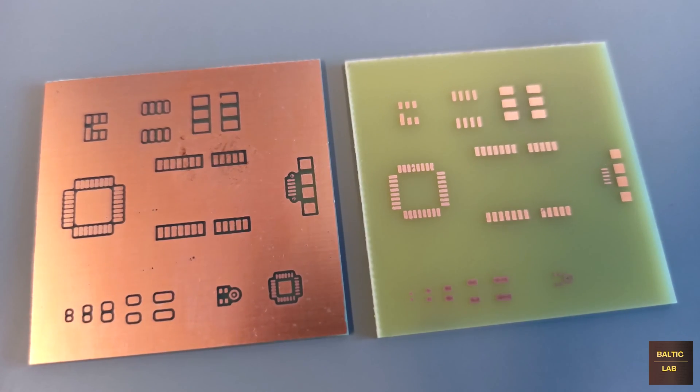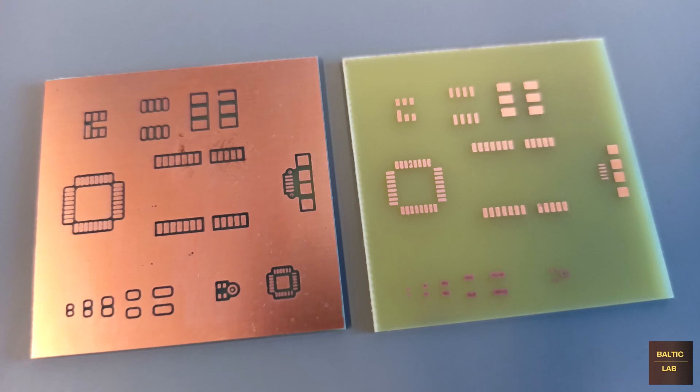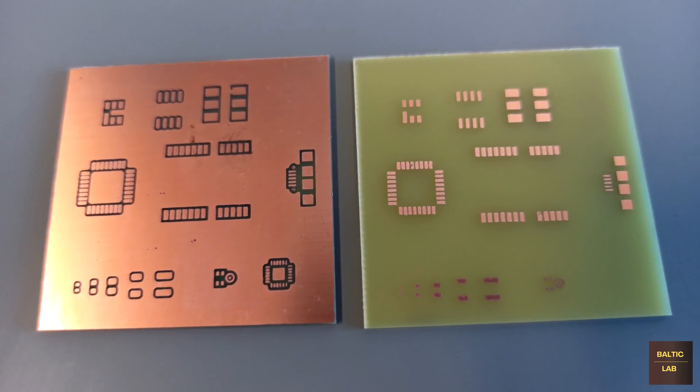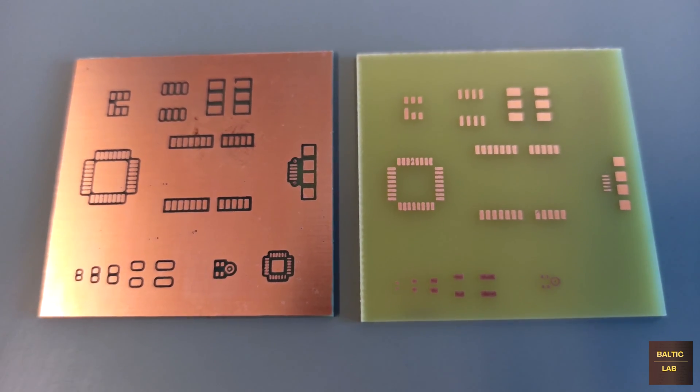The PCB shown on the left-hand side took about one hour in the etching solution described, while the one on the right barely needed 30 minutes.